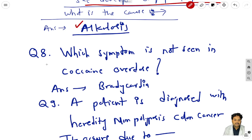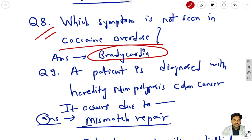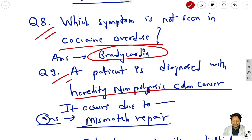Question 8: which symptom is not seen in cocaine overdose? Bradycardia - because cocaine will cause tachycardia, so the answer is bradycardia. Question 9: a patient is diagnosed with hereditary non-polyposis colon cancer; it occurs due to mismatch repair defect.